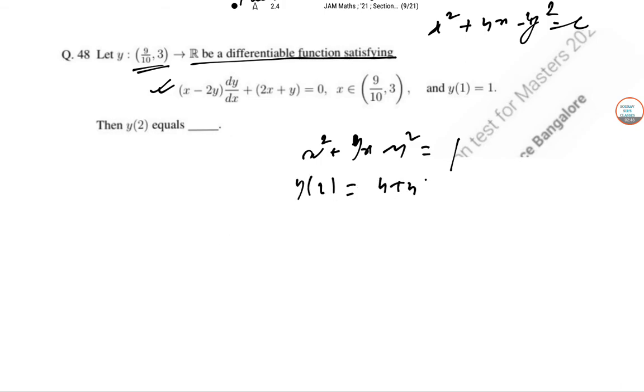So x² + y(2)... So y(2): 4 + 2y(2) - y²(2) = 1. So 2y(2) - 3 = 0.